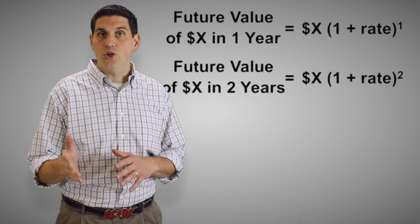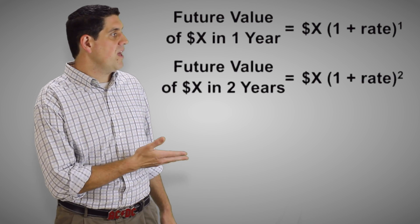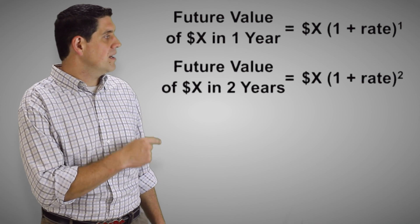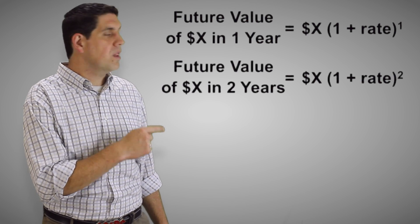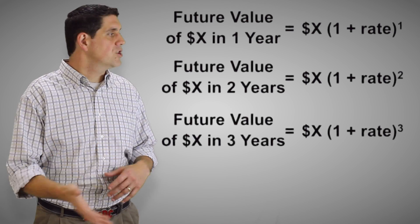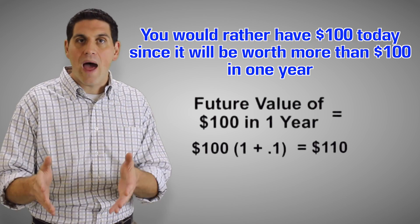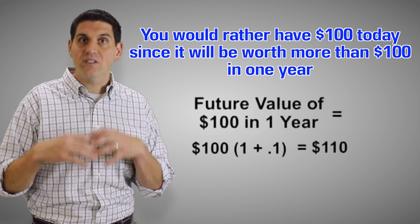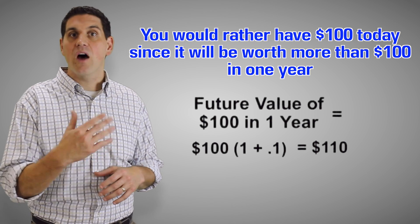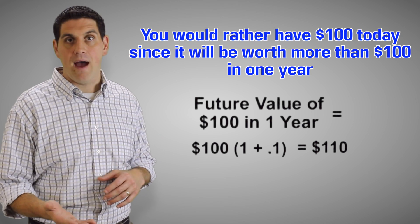To figure it out for two years, it would look like this: the quantity of that money times 1 plus the interest rate squared. And for three years, it would be cubed. Clearly, you'd rather have $100 today than $100 a year from now.